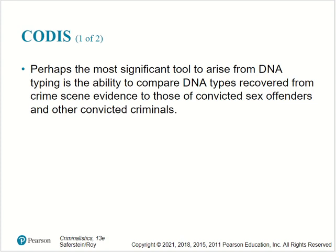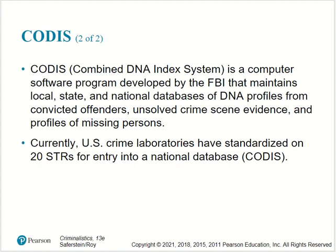Perhaps the most significant tool to arise from DNA typing is the ability to compare DNA types recovered from crime scene evidence to those of convicted sex offenders and other convicted criminals. CODIS — Combined DNA Index System — is a computer software program developed by the FBI that maintains local, state, and national databases of DNA profiles from convicted offenders, unsolved crime scene evidence, and profiles of missing persons. Currently, U.S. crime laboratories have standardized on 20 STRs for entry into the national database CODIS.